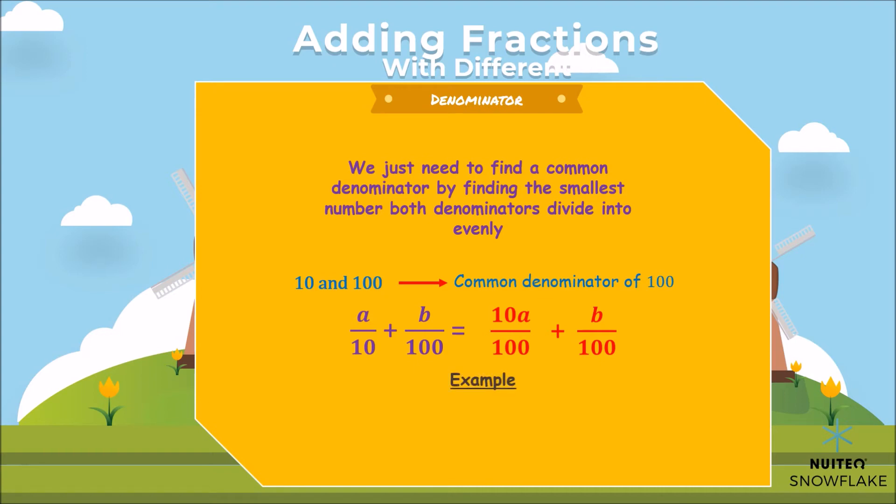For example, 3 tenths plus 20 hundredths are equal to 50 hundredths. Remember we need to multiply 3 tenths by 10.